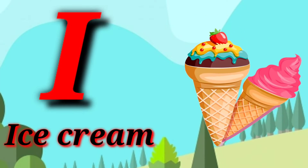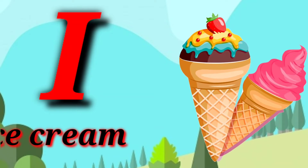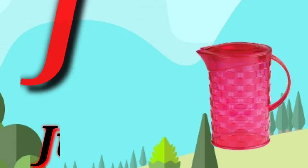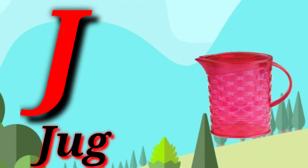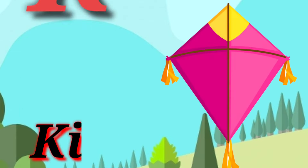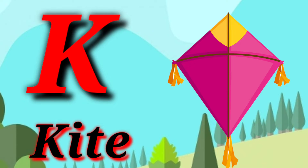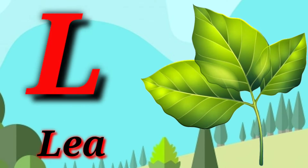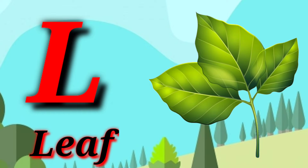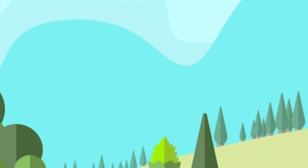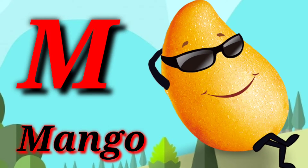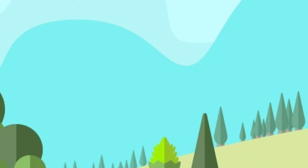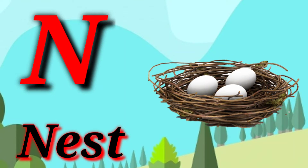I for ice cream, J for duck, K for kite, L for leaf, M for mango, N for net.